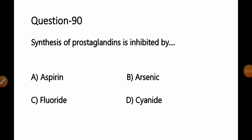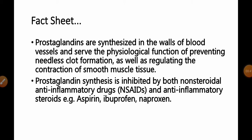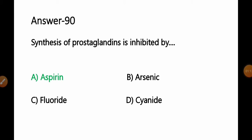Synthesis of prostaglandin is inhibited by: A) Aspirin, B) Arsenic, C) Fluoride, D) Cyanide. Fact: Prostaglandins are synthesized in the walls of blood vessels and serve the physiological function of preventing needless clot formation and regulating smooth muscle contraction. Prostaglandin synthesis is inhibited by non-steroidal anti-inflammatory drugs and anti-inflammatory steroids, for example aspirin, ibuprofen, and naproxen. So aspirin inhibits prostaglandin synthesis. Option A is the correct answer.